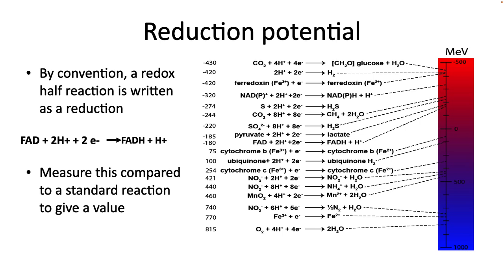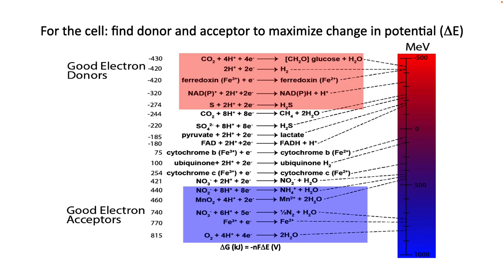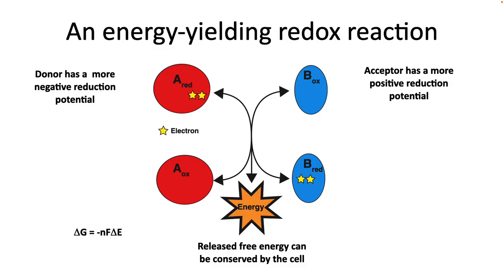What is important is their relative potential. Half reactions at the top of the table are good electron donors and will donate electrons to things below them in the table. Those at the bottom are good electron acceptors and will accept electrons from anything above them. In an energy-yielding redox reaction, compound A has a more negative reduction potential and donates electrons to compound B. The transfer releases energy, which can be captured by the cell, typically in the form of ATP or reducing power — which is electrons on energy carriers.